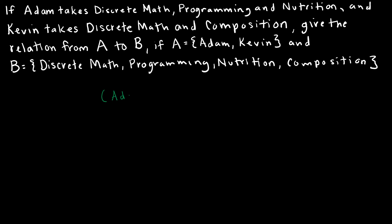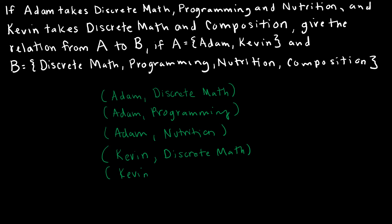So I should have an ordered pair that maps Adam to discrete, and I should have an ordered pair that maps Adam to programming, and I should have an ordered pair that maps Adam to nutrition. I'm sure my brothers love that I use their names in my videos. And then I should, sorry Eric, I didn't include you on this one. And then Kevin takes discrete, so again that would be an ordered pair. And then Kevin also takes composition. So R would be the set containing all of those ordered pairs.